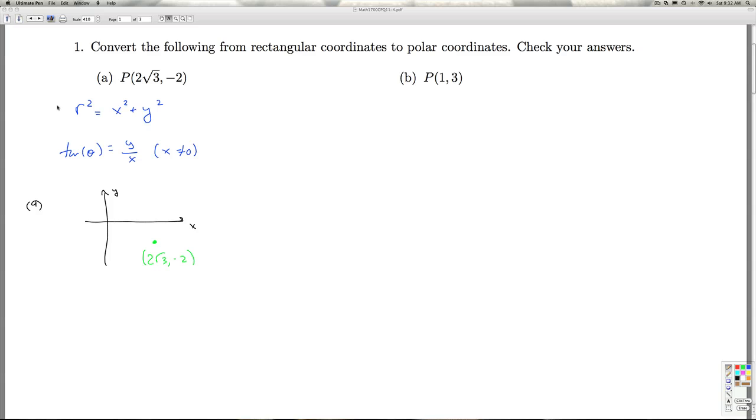It's 2 radical 3 comma negative 2, so it's going to be down here in quadrant 4. So r squared is x squared plus y squared. When I square the 2, I get 4. When I square radical 3, I get 3. 4 times 3 is 12.